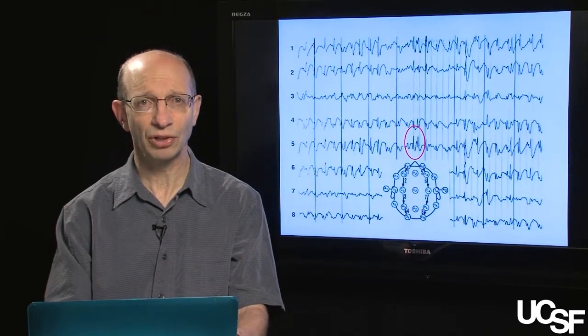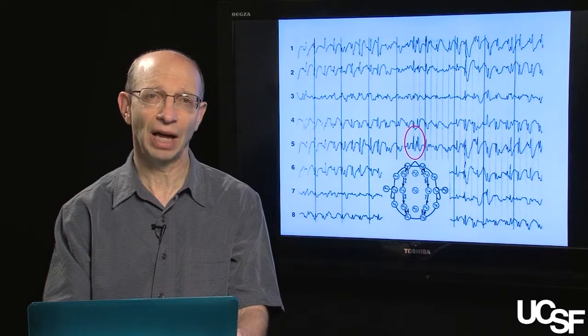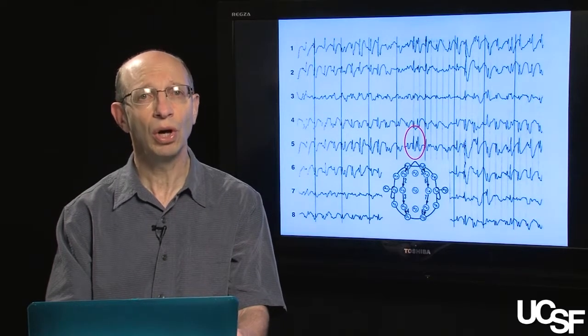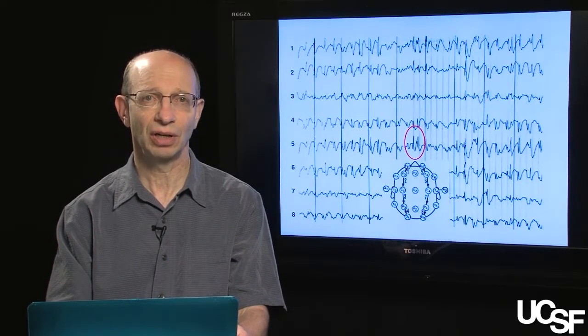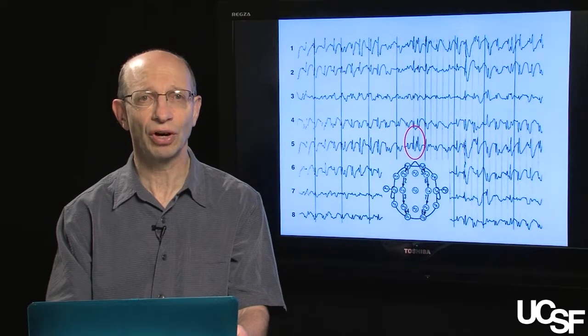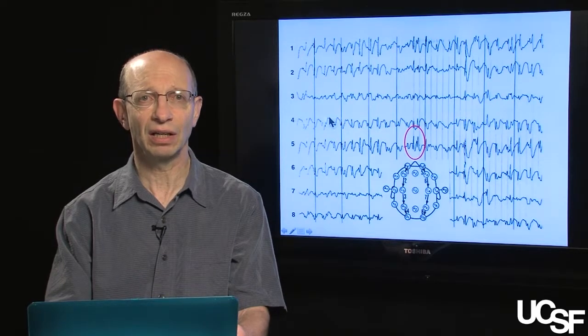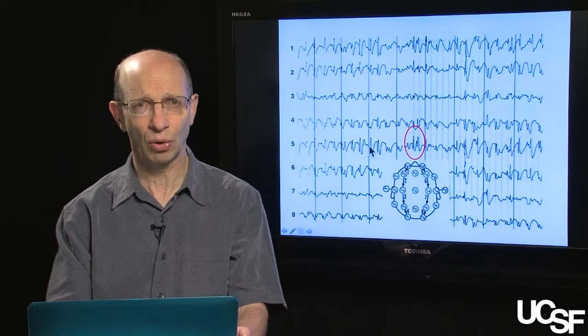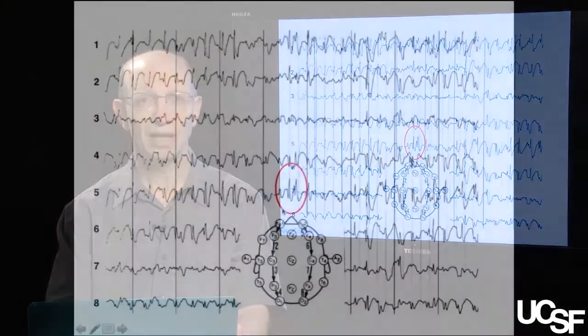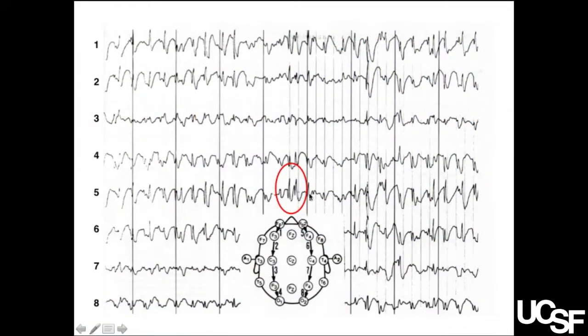As you recall from the previous module, we ended by taking a look at an EEG that was recorded while a patient was having a seizure. We observed that during the seizure, there is electrical activity recorded from the EEG that has the properties of very high amplitude or high voltage as well as synchronization, depicted here by the existence of this spiking-like activity.